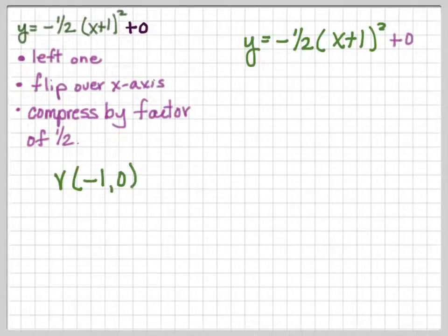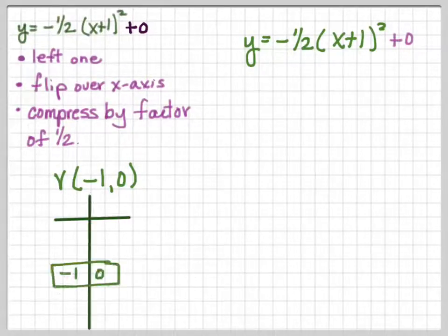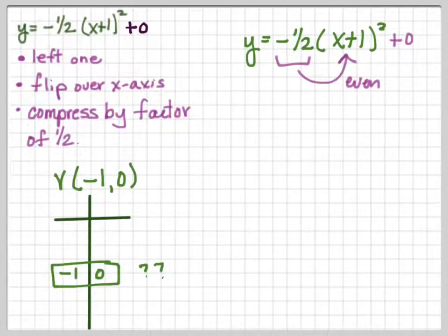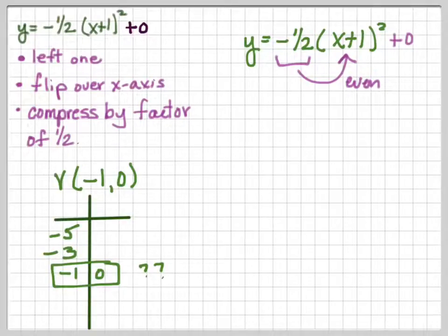The vertex is at (-1, 0), so we put that in the middle of our chart. We need to rethink which x-values to choose to avoid graphing fractions. Since we're multiplying by ½ — which is the same as dividing by 2 — what's inside the parentheses needs to be an even number. For that to happen, x must be an odd number. So we choose x = -3, -5 to the left and x = 1, 3 to the right, skipping by 2.